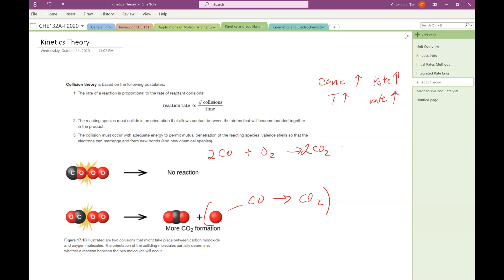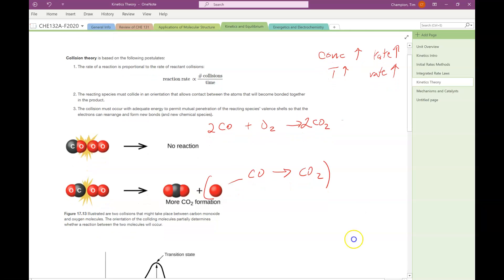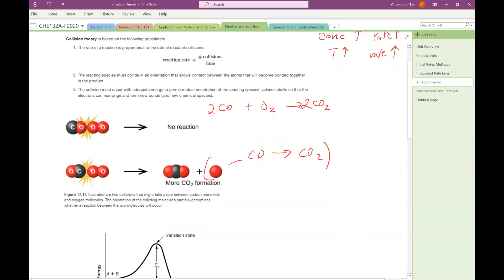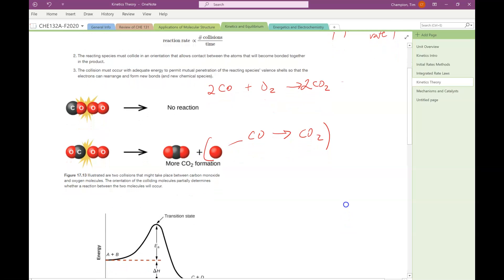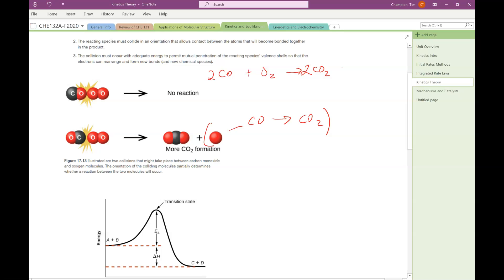Finally, the collision has to occur with adequate energy to let the reaction happen. If you've ever been in a car collision, there are car collisions where no damage is done because you weren't going fast enough, didn't have enough momentum. But then there are times when you're talking thousands of dollars in repairs. I once hit a dump truck, couldn't have been going more than five miles an hour—I did $1,800 damage to my car. You've got to have enough energy for the collision to take place.